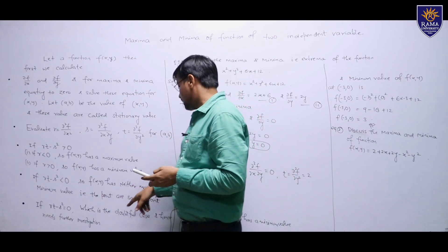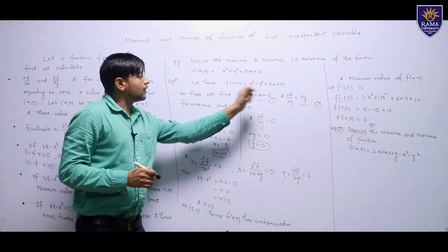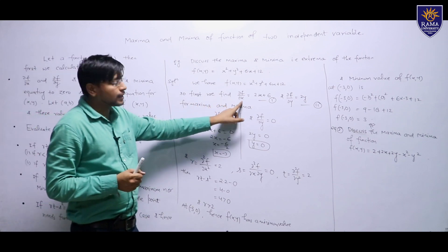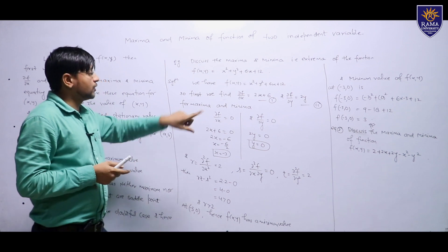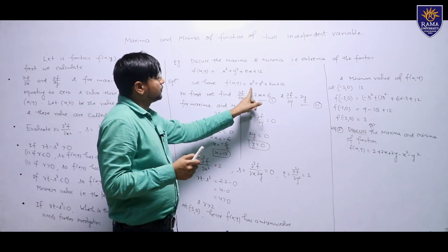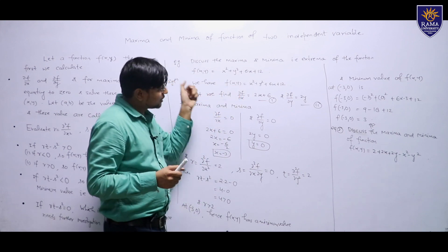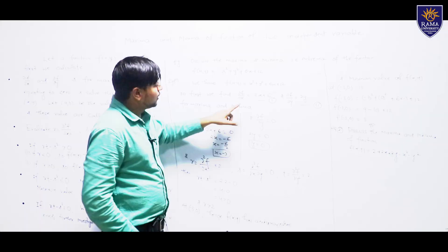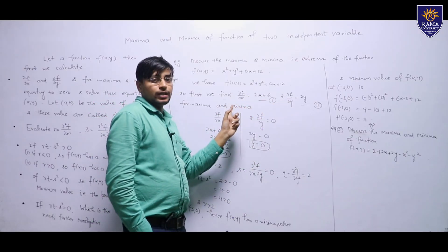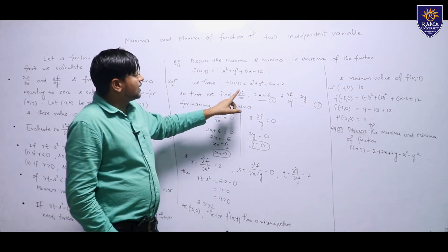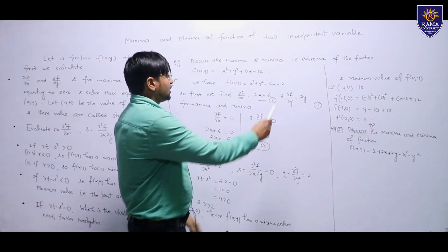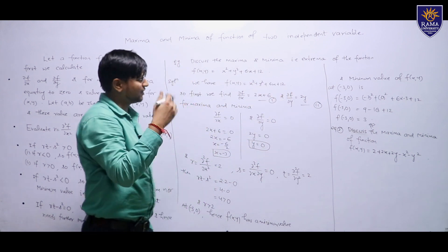We have the function f(x,y) = x² + y² + 6x + 12. First we find the partial differentiation with respect to x. When differentiating with respect to x, y is treated as a constant. So ∂f/∂x = 2x + 6, since y² + 12 differentiates to 0 with respect to x.